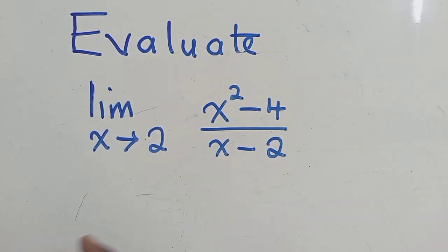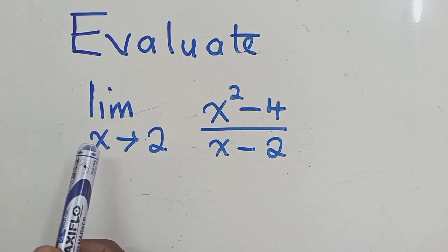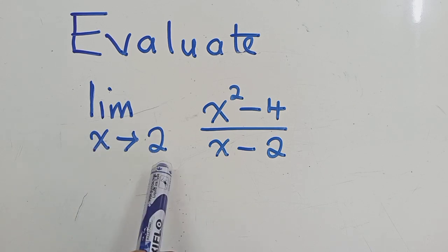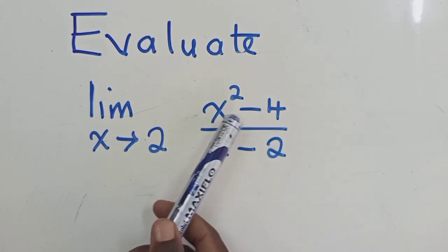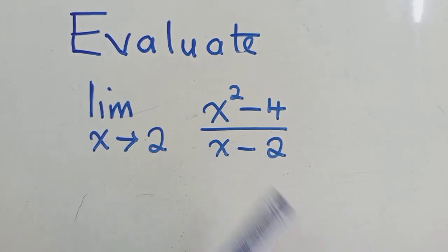Okay, so here we need to evaluate this one. Limit as x approaches 2 of x squared minus 4 over x minus 2.